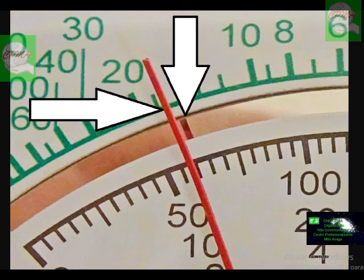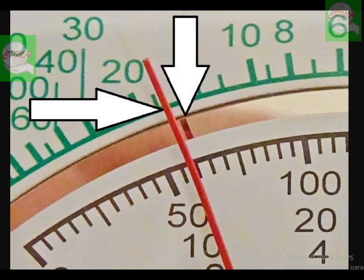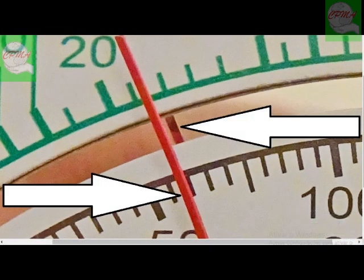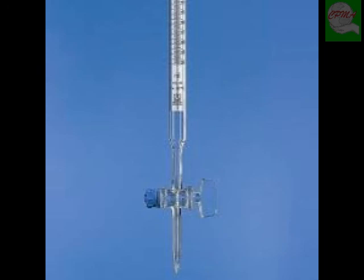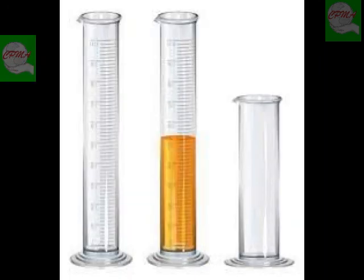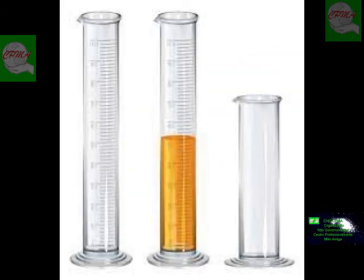O erro de paralaxe é um erro que ocorre pela observação errada na escala de graduação causada por um desvio óptico causado pelo ângulo de visão do observador. Pode ocorrer em vidrarias como buretas, provetas, pipetas, etc. Quando é necessário medir um volume na proveta, se você não observar o menisco de um ângulo que faça o menisco ficar exatamente na altura dos seus olhos.